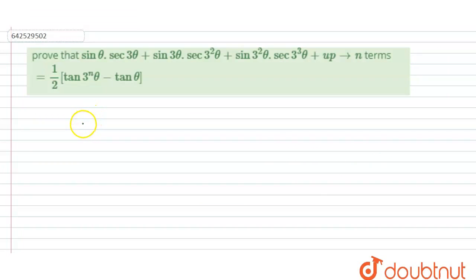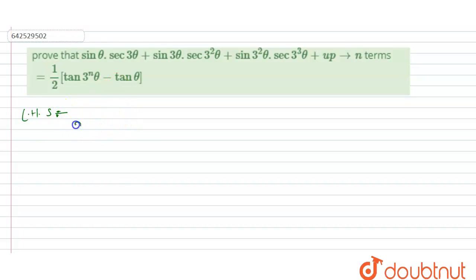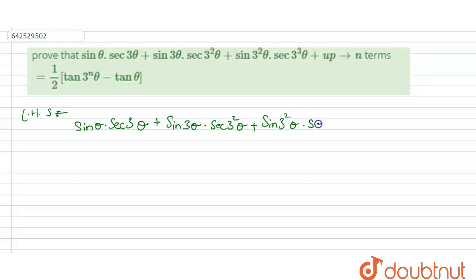Hello students. In this question we have to prove that sin θ · sec 3θ + sin 3θ · sec 3²θ + ... up to n terms is equal to the given equation. So our left hand side is sin θ · sec 3θ + sin 3θ · sec 3²θ + sin 3²θ · sec 3³θ + ... up to n terms.